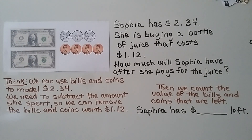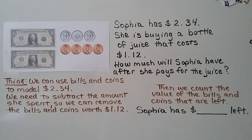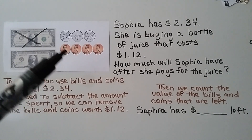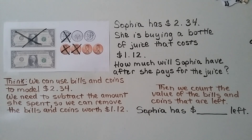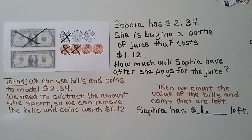Sophia has two dollars and 34 cents — two one-dollar bills, three dimes, and four pennies. She is buying a bottle of juice that costs one dollar and twelve cents. We use bills and coins to model $2.34, then subtract the amount she spent by removing one dollar, one dime for ten cents, and two pennies for twelve cents. Counting what remains: one dollar, two dimes, and two pennies — she has one dollar and twenty-two cents left.